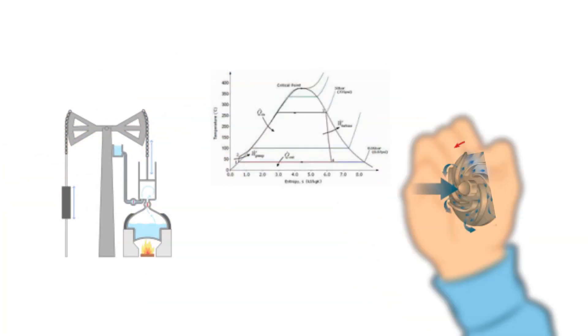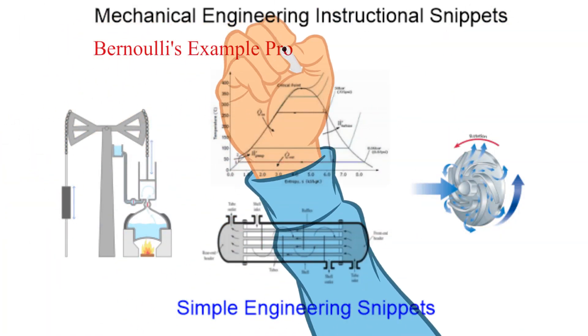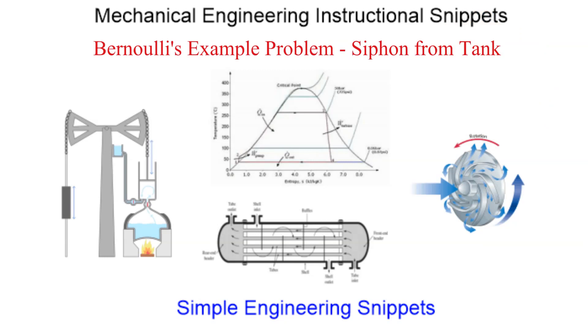In this instructional snippet we will be using Bernoulli's equation to determine when a siphon will fail to operate. We will be solving the same problem using two different approaches, however, both approaches will use Bernoulli's equation.